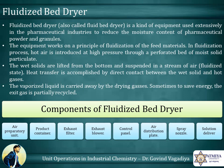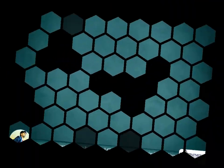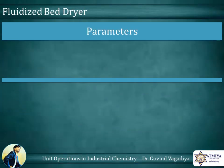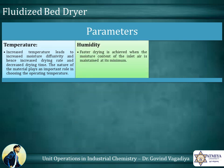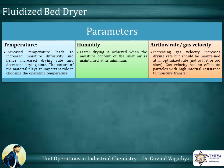The components of this dryer are described here. Parameters of the fluidized bed dryer: the first parameter is temperature. Increased temperature leads to increased moisture diffusivity, and hence increased drying rate and decreased drying time. The nature of the material plays an important role in choosing the operating temperature. The second parameter is humidity — faster drying is achieved when the moisture content of the inlet air is maintained at its minimum. Another parameter affecting rate of drying is air flow rate or gas velocity. Increasing gas velocity increases drying rate, but should be maintained at an optimized rate — not too fast or too slow. Gas velocity has no effect on particles with high internal resistance to moisture transfer.